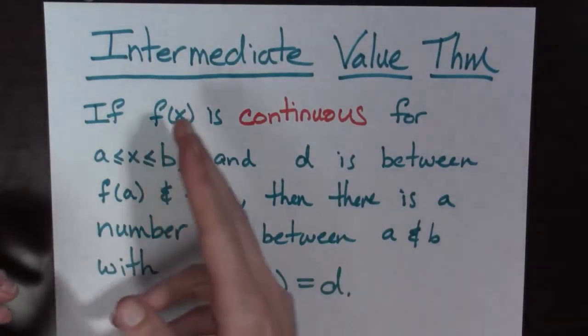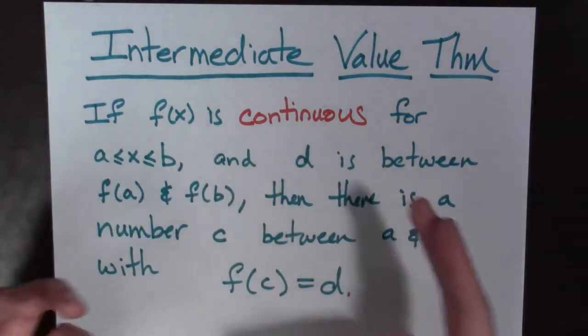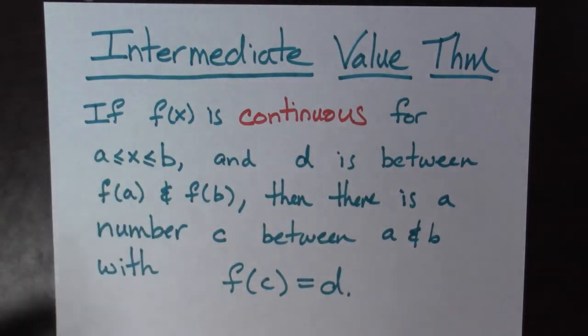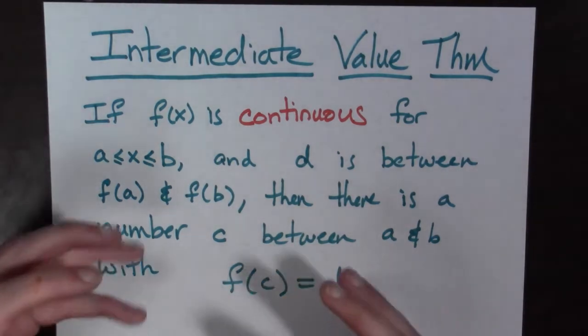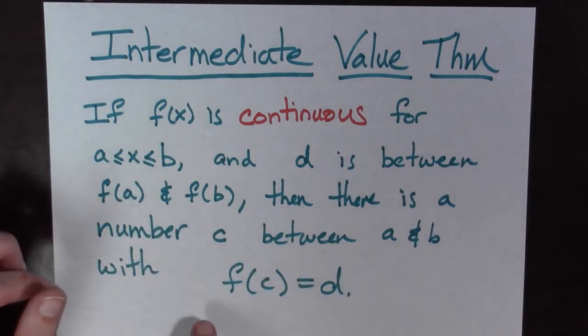To answer this question, we're going to make use of the Intermediate Value Theorem. This says if you have a continuous function on some closed interval a ≤ x ≤ b, and there's some value d between f(a) and f(b), then there has to be a number c between a and b such that f(c) = d.